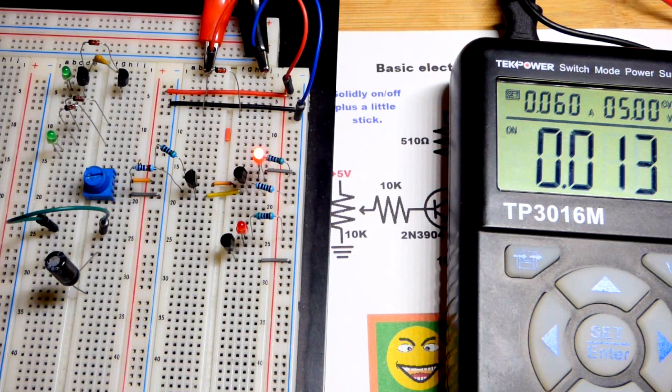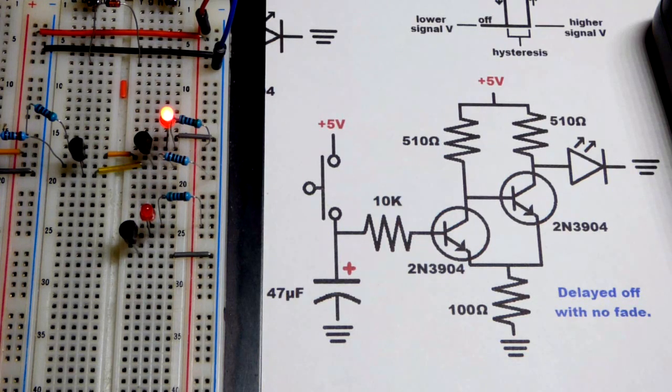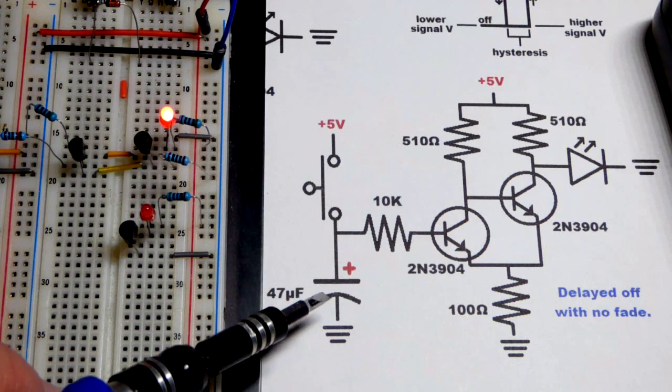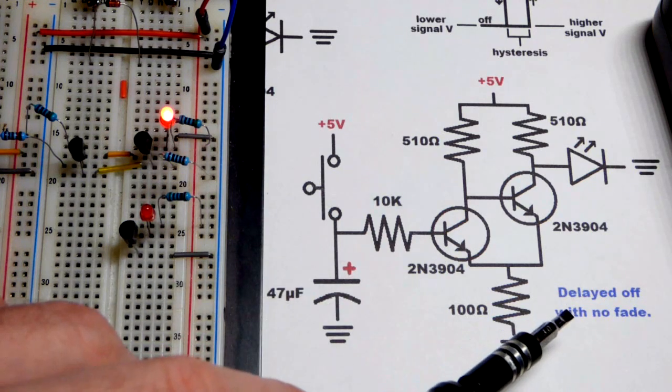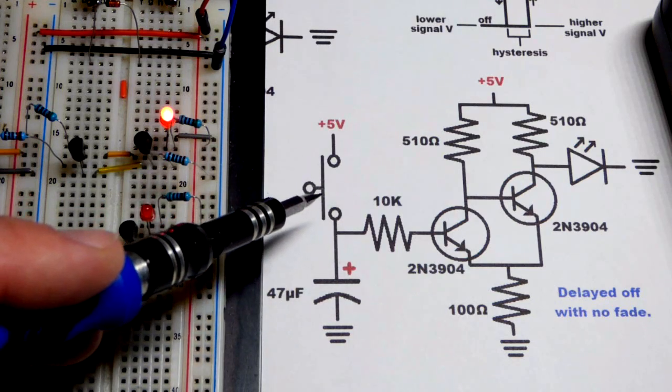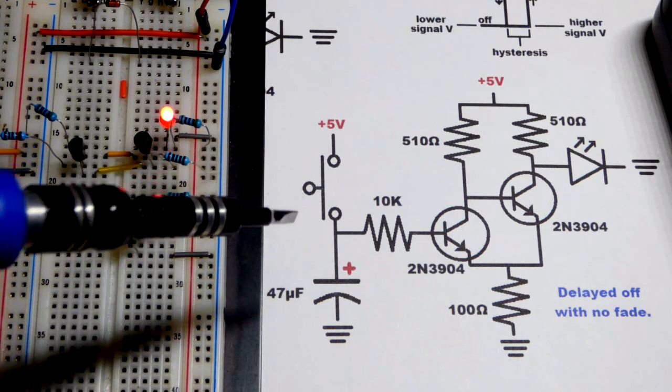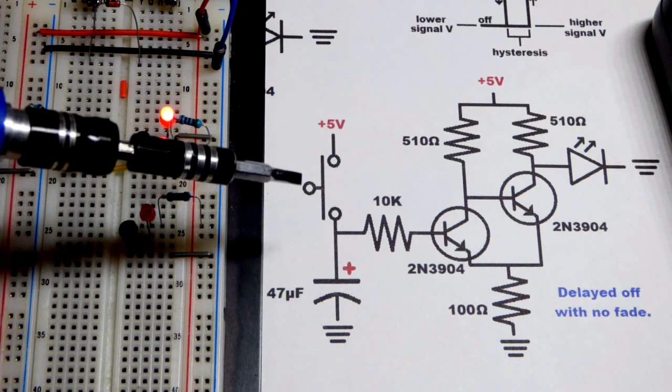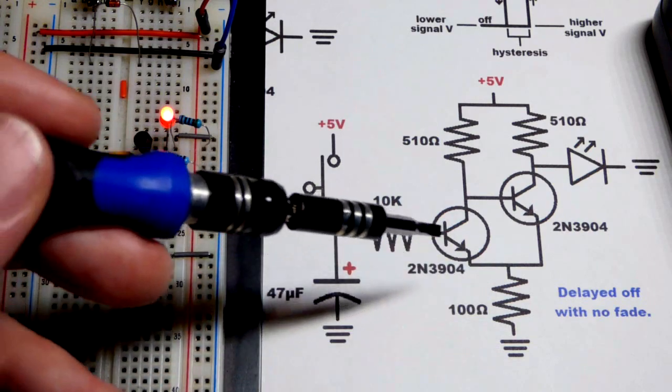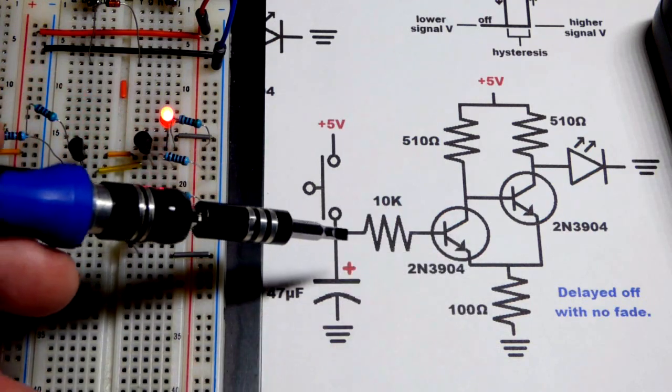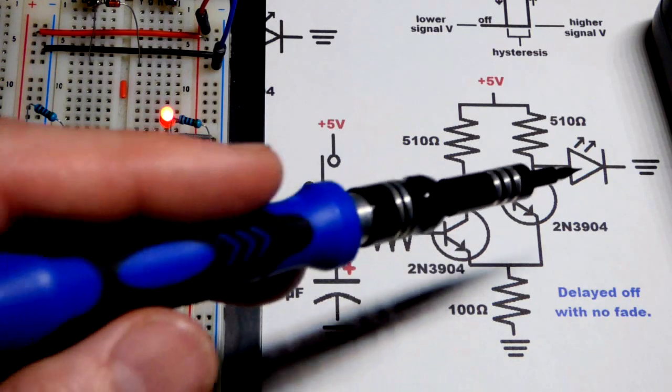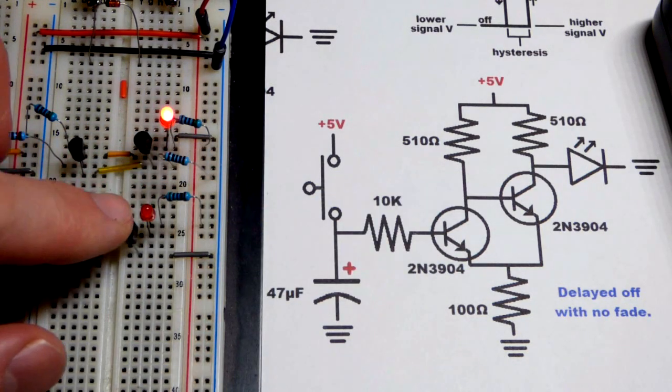Now I thought we would also look at the Schmidt trigger with a capacitor to set a time for it to turn off. We'll turn it on with a switch, I'm just going to use a jumper to simulate a switch. As soon as we release the switch, the capacitor will discharge and it will take time, and then once it doesn't have enough voltage to get that transistor to conduct, then the output will go low.